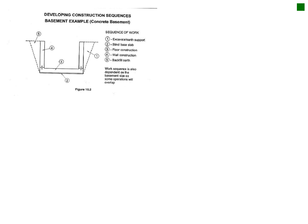We've got a very simple example of a basement that needs to be constructed. You've got your excavating and support, your blinding slab, your floor construction, wall construction, and your backfill. You can see it's been drawn out — this is the diagram that the previous figure spoke about. Having a diagram just makes it much easier, and this can also be utilized whenever you do a method statement.